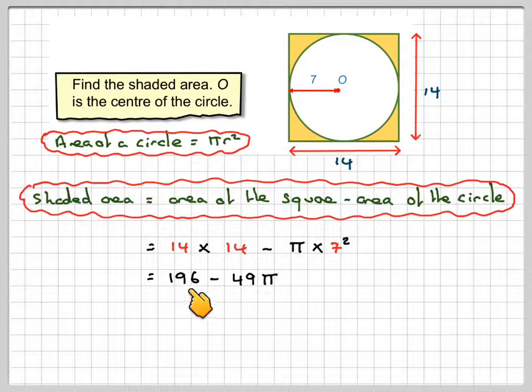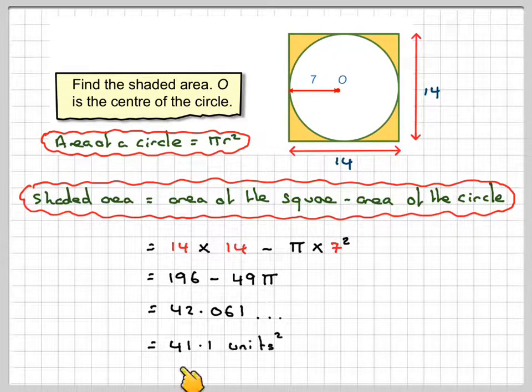So on our calculator we put 196 minus 49 times pi, and that gives me 42.061. And normally we round off to 3 significant figures, so it becomes 41.1 units squared.